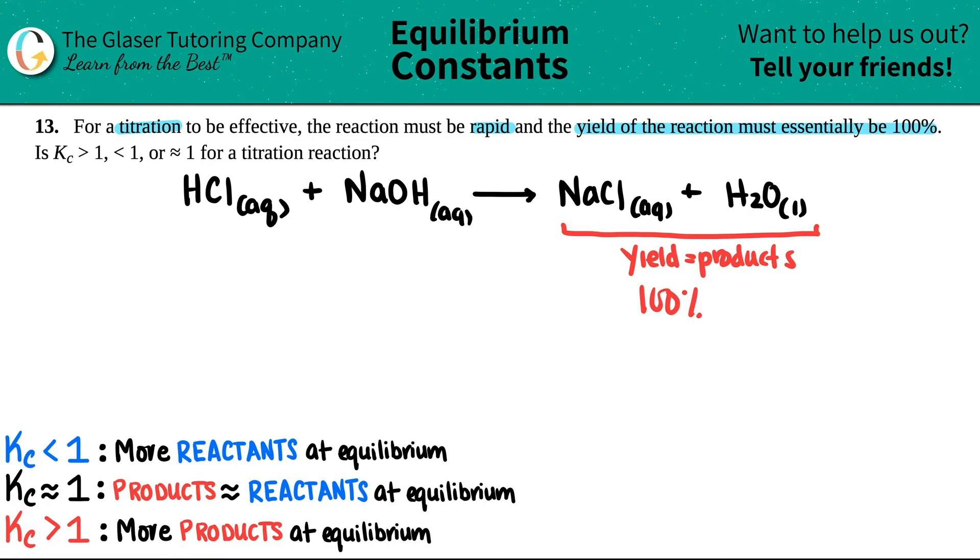So that means that basically, if you have 100% of your products, how much of your reactants are you going to have left? Yeah, roughly 0%. That's what a titration is. And that's how it has to be effective. You react a strong acid with a strong base or any acid with any base. And it has to be rapid, which means that this conversion has to be super quick.